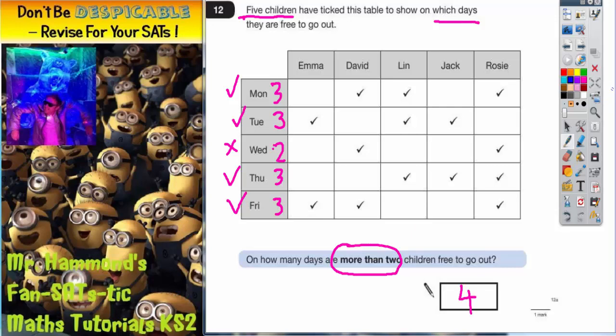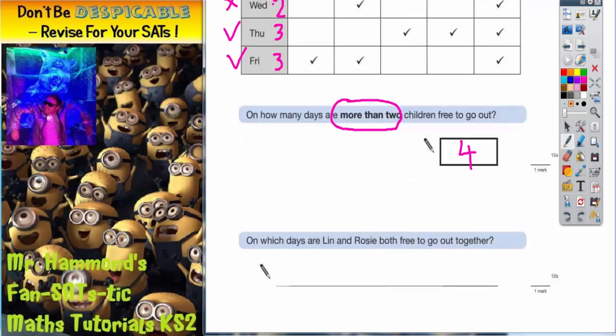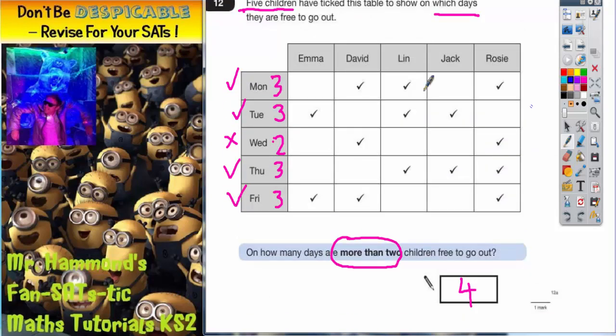Scroll down for the next question. It says on which days are Lynn and Rosie both free to go out together? So they need to both be free, Lynn and Rosie. So let's check each day in turn. On Monday are Lynn and Rosie both free? Yes they are. So Monday can be done for both of them.